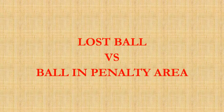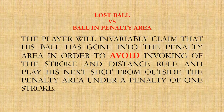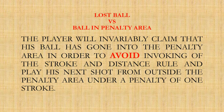Lost ball versus ball in penalty area: whenever a rough area is in the vicinity of a penalty area, there is always a conflict over the location of the ball. In case the ball is not found, the player will invariably claim that his ball has gone into the penalty area in order to avoid invoking the stroke and distance rule, and play his next shot from outside the penalty area under a penalty of one stroke.